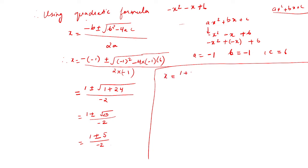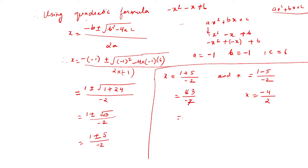So x must be equal to 1 plus 5 by minus 2, or x must be equal to 1 minus 5 by minus 2. So you will be getting: 1 plus 5 is 6 over minus 2, and x is going to be equal to minus 4 by 2. So 6 over minus 2 gives you minus 3, and minus 4 over 2 gives you 2. Therefore, the other zeros are x equal to minus 3 and x equal to 2.